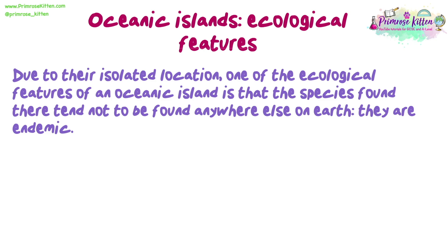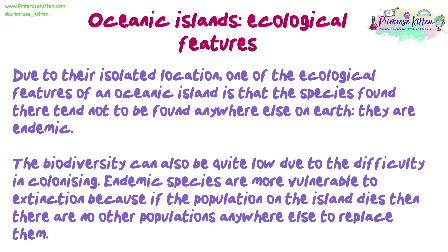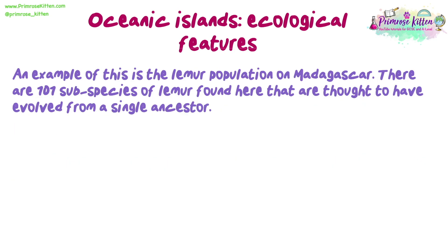Due to their isolated location, one of the ecological features of an oceanic island is that the species found there tend not to be found anywhere else on Earth — they are endemic. The biodiversity can also be quite low due to the difficulty in colonising. Endemic species are more vulnerable to extinction because if the population on the island dies, there are no other populations anywhere else in the world to replace them. An example of this is the lemur population on Madagascar.